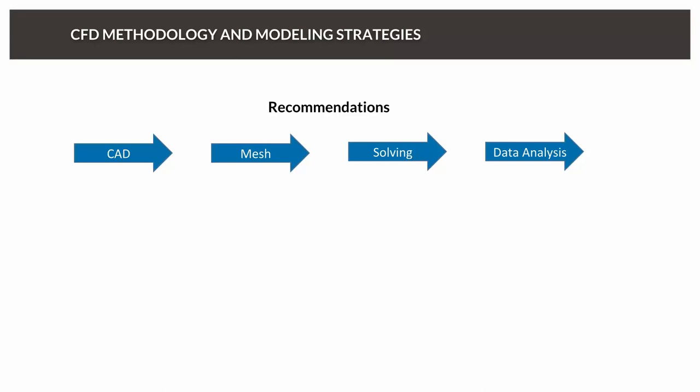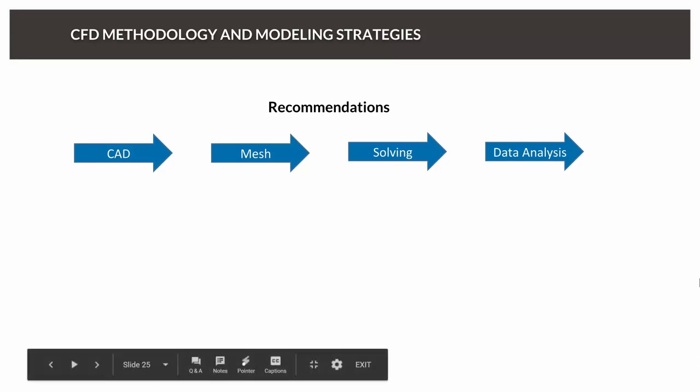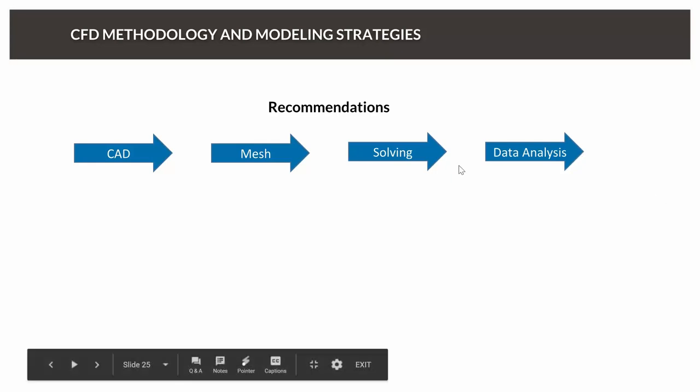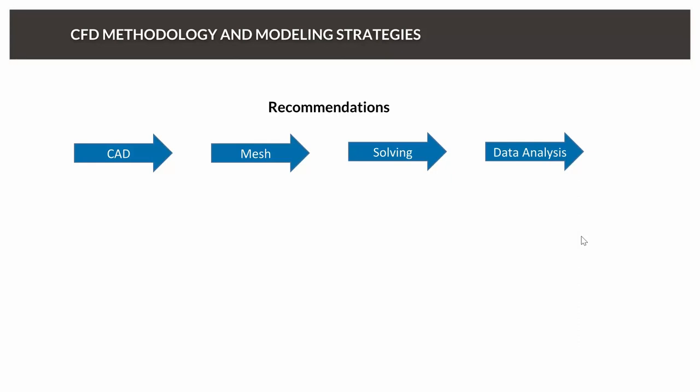If we think about the process of doing CFD, we can line it up going from left to right. We typically start with some CAD description of our geometry. From the CAD we have to make a discrete mesh representation that the flow solver can compute on. Then we do the actual solving phase. And towards the end we do the interesting stuff — we try to analyze the data and draw some conclusions from what we've done.